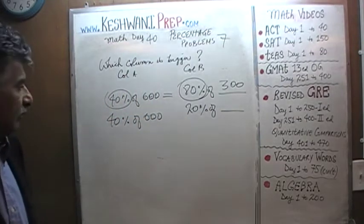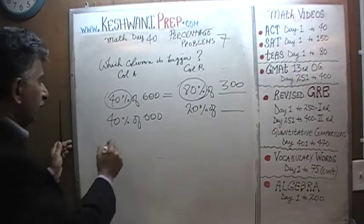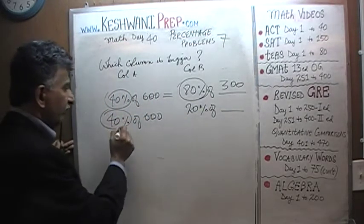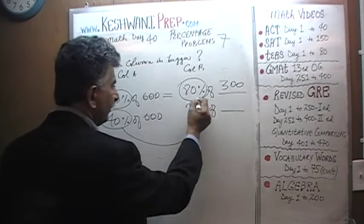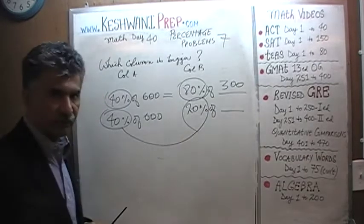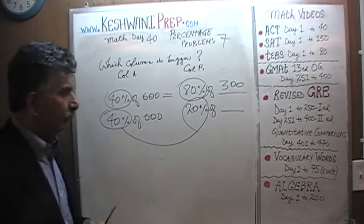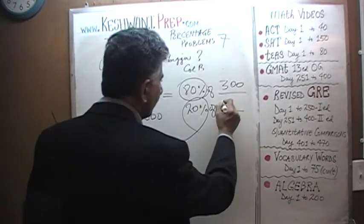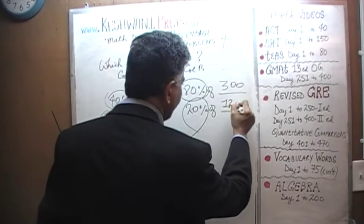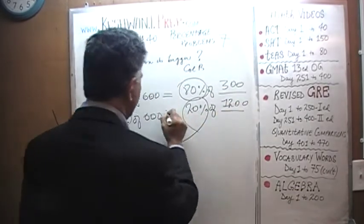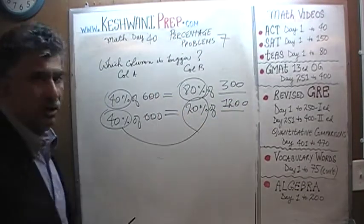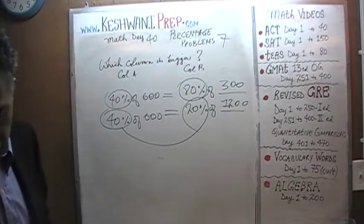20% of what? Instead of 40% we have half the percentage — only 20%. Since the percentage is half as much, we need twice the amount in order for these two quantities to be equal to each other. So the answer is 20% of 1200.